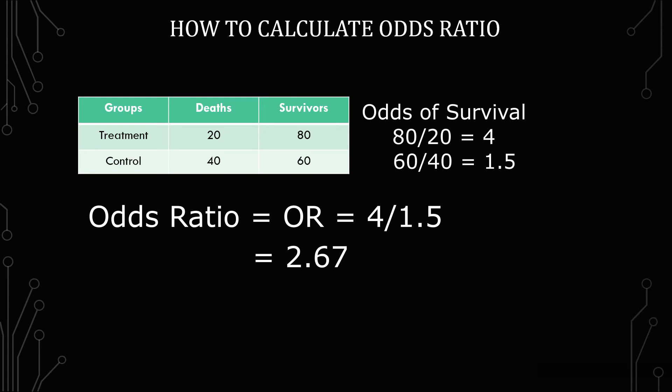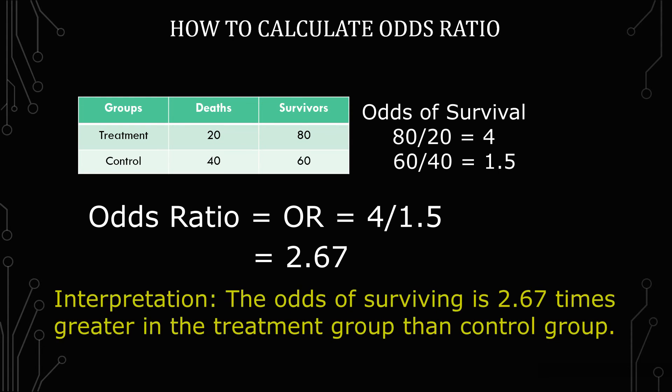How do you interpret that? This is how you interpret that. The odds of surviving with treatment is 2.67 times greater in the treatment group than control.